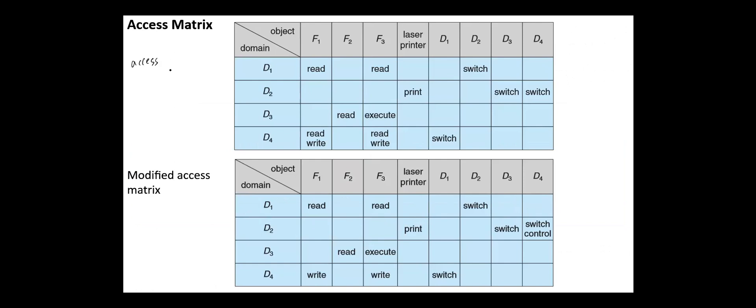If access IJ includes the control right, then a process executing in domain DI can remove any access right from row J. For example, suppose in this figure we include the control right in access D2, D4. Then a process executing in D2 can modify domain D4. Here the read operations for files F1 and F3 are removed from the above figure.